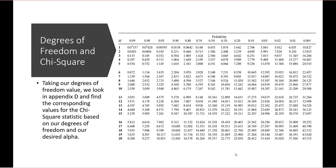We use a chi-square table in the appendix, selecting our degrees of freedom and our desired alpha value. For alpha = 0.05 and degrees of freedom = 1, the critical value is 3.841. Our calculated chi-square value of 58 is much higher than this critical value, so we have statistical significance.